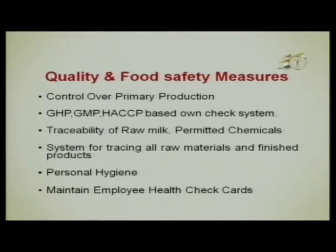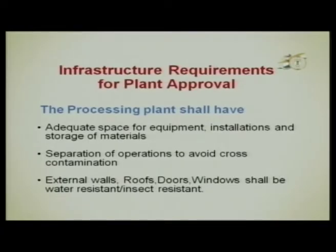Personal hygiene must be ensured and employee health check cards maintained. We will now look at the infrastructure requirements for plant approval — what should be available in a processing plant before approaching EIC or EIA for seeking approval.